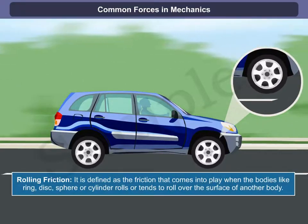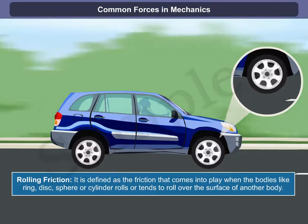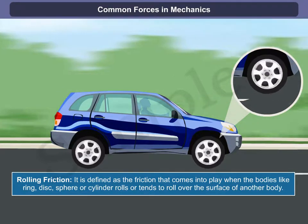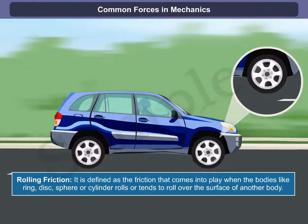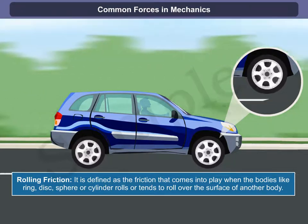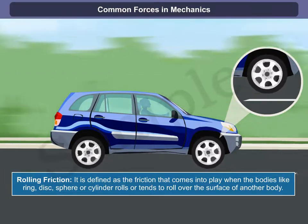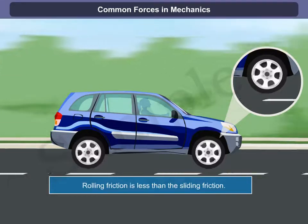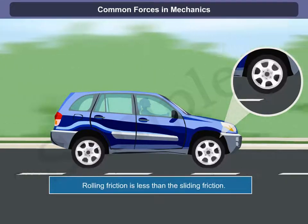Rolling friction is defined as the friction that comes into play when bodies like ring, disc, sphere, or cylinder roll or tend to roll over the surface of another body. Rolling friction is less than sliding friction.